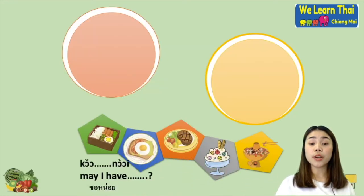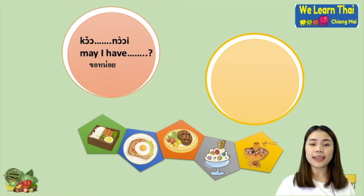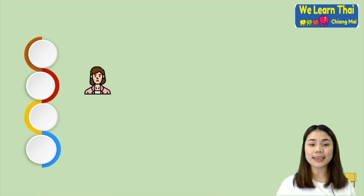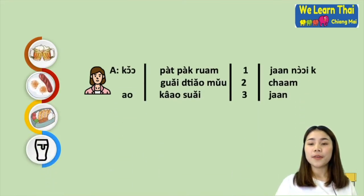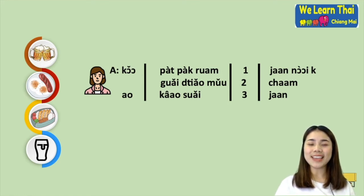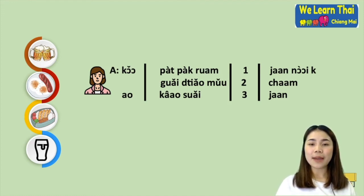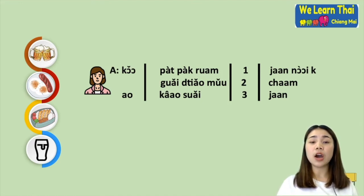When you want to order some food you can use the word ขอ...หน่อย — it means may I have. Or you can use the word เอา — just meaning want or take. For example: ขอผัดผักรวมหนึ่งจานหน่อยค่ะ — may I have one plate of fried mixed vegetables. Or if you want to order noodle: ขอก๋วยเตี๋ยวหมูสองชามค่ะ — may I have two bowls of noodle with pork. Or you can use เอา: เอาข้าวสวยสามจานค่ะ — I will take three plates of steamed rice.